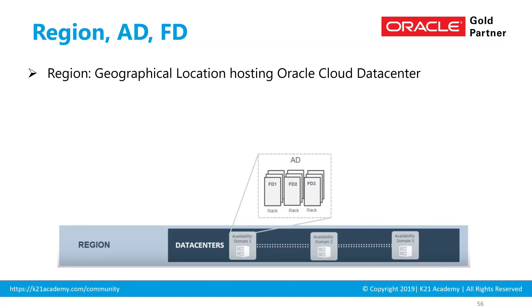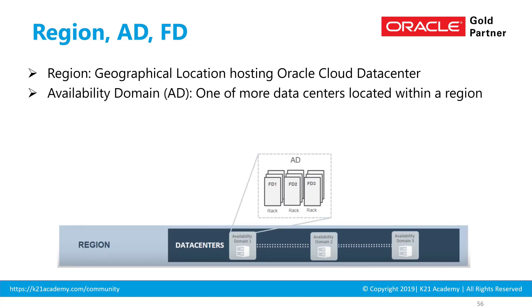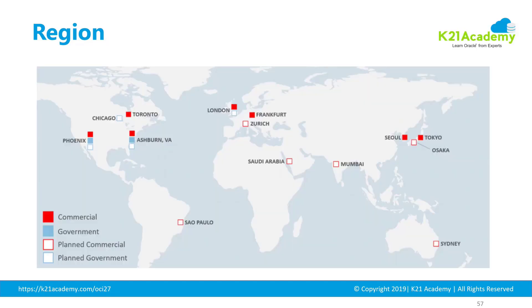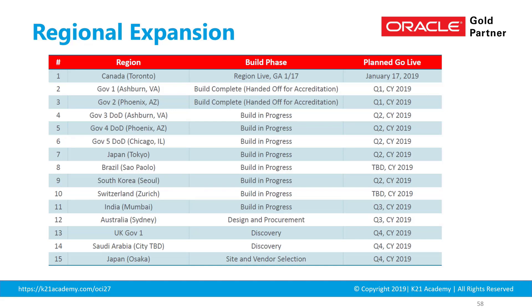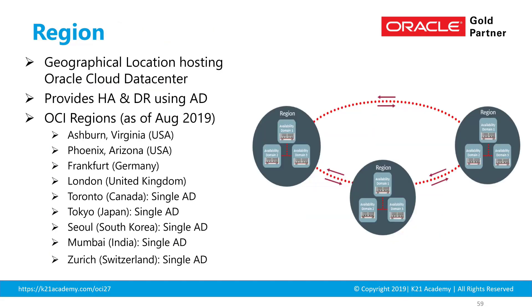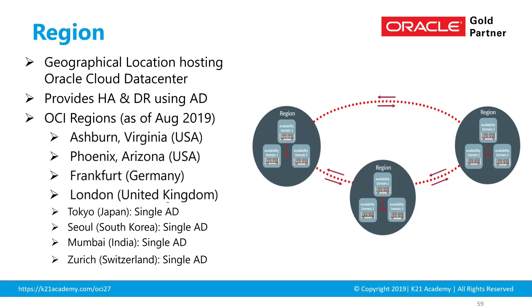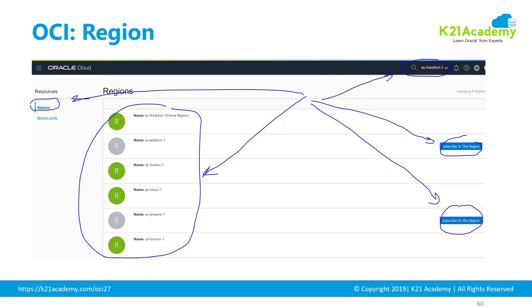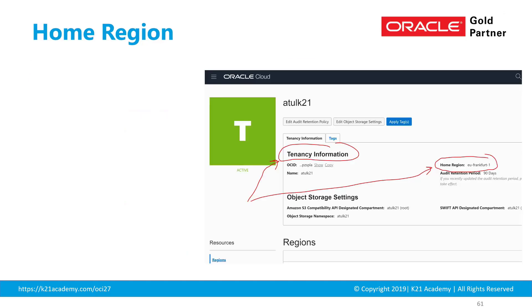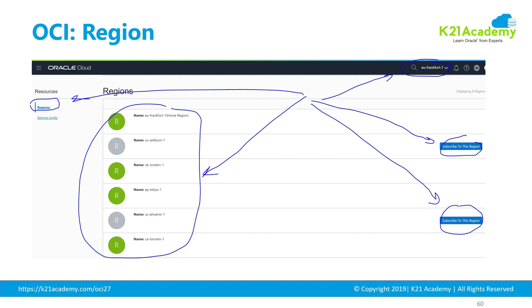To recap: a region is a geographical location hosting the Oracle Cloud data center, and within a region you can have up to three data centers interconnected by high-bandwidth, low-latency connections. As of August 2019, four regions have three availability domains while five have a single availability domain. Before users can access a region, the administrator must subscribe to it, and when provisioning a resource like a database, machine, or load balancer, you select the appropriate region and availability domain.